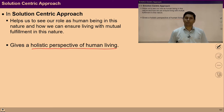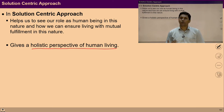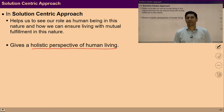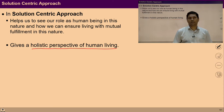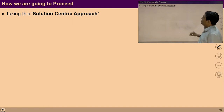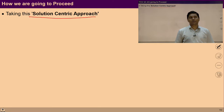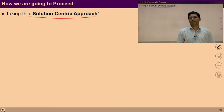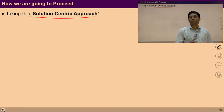We can see that the prevailing approach today is the problem-centric approach. However, what approach we are going to take here for critical analysis is the solution-centric approach. Taking the solution-centric approach, we try to develop a holistic perspective about human existence. Through this holistic perspective, we have been able to identify our goals at all four levels of living.